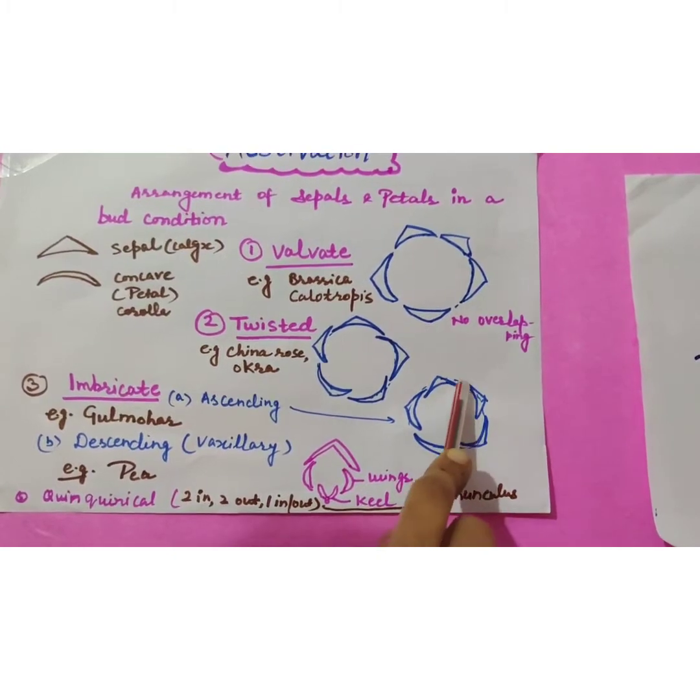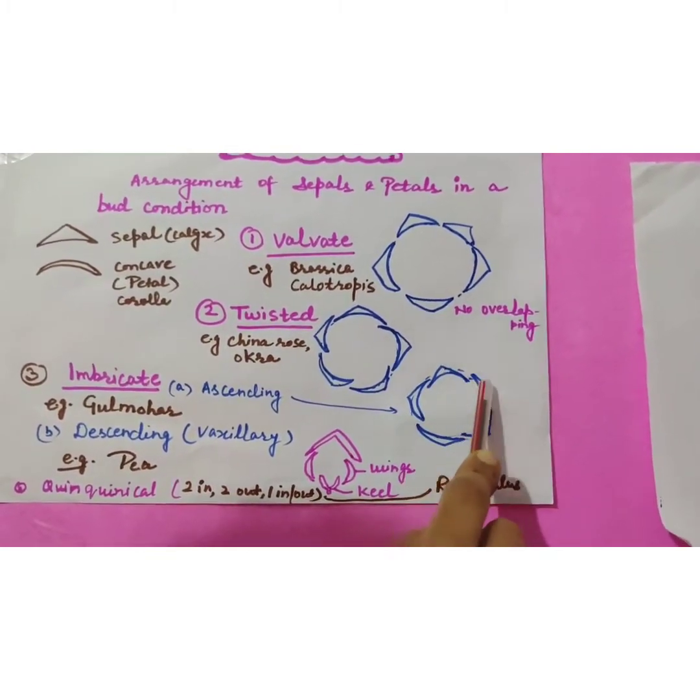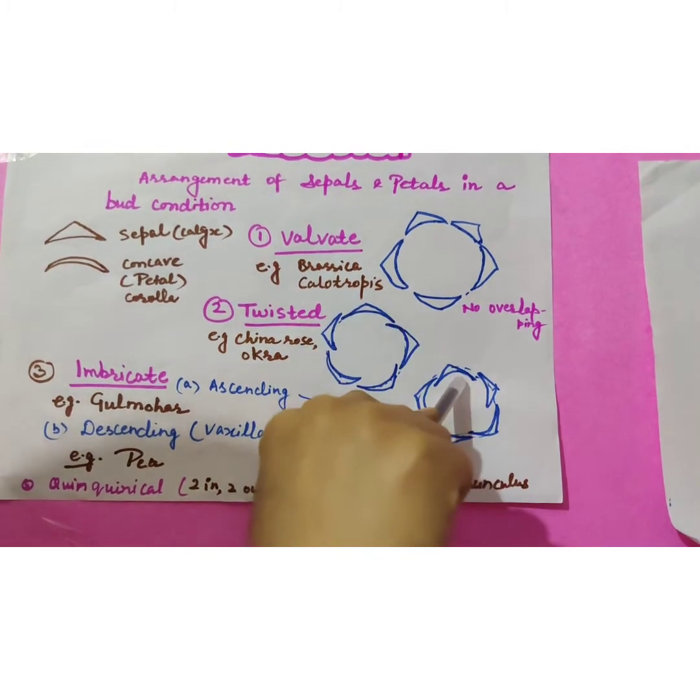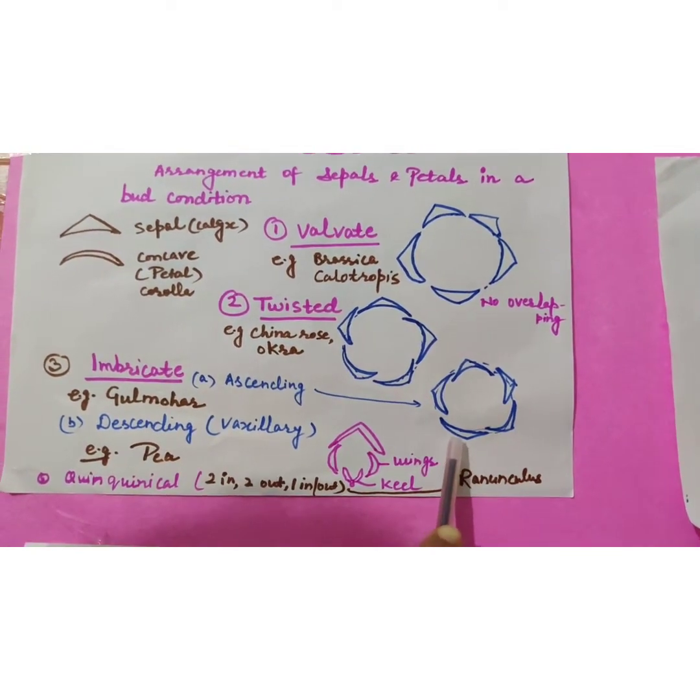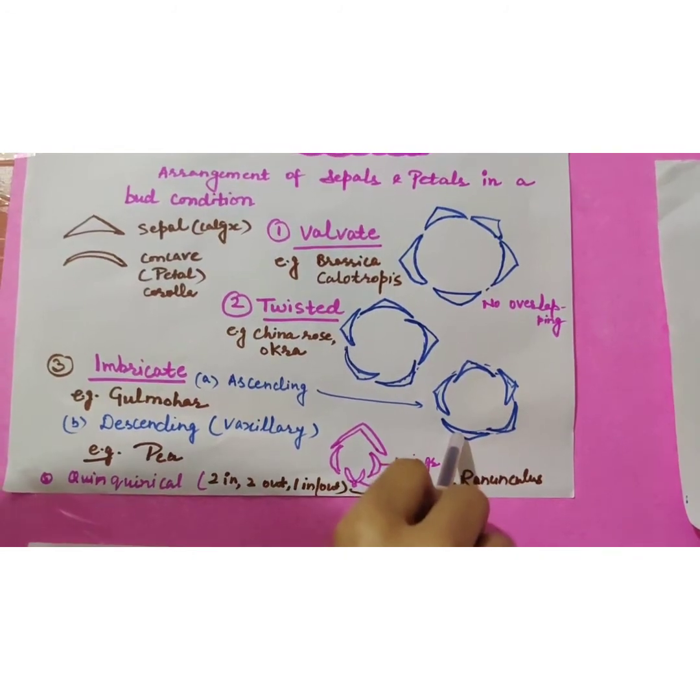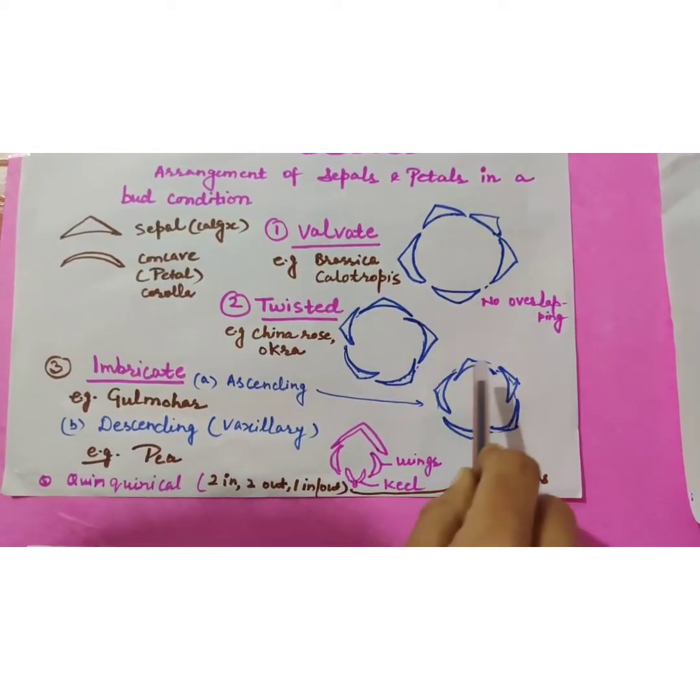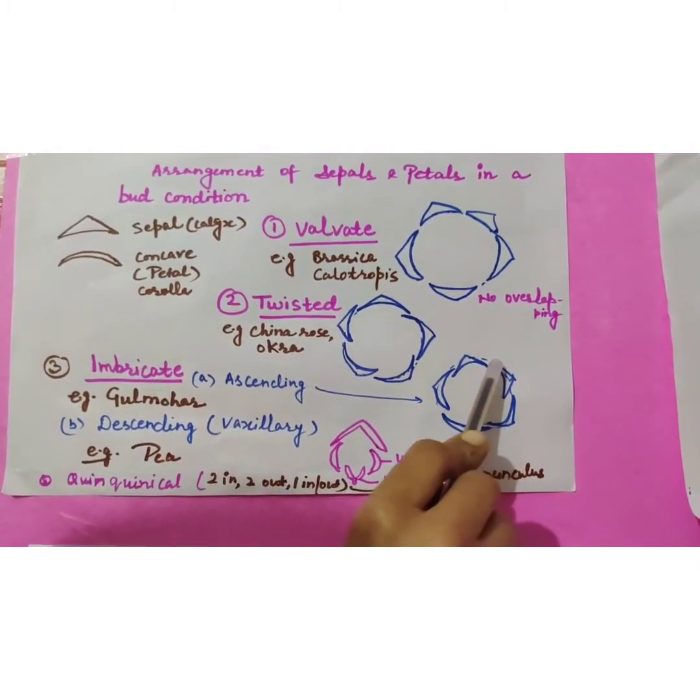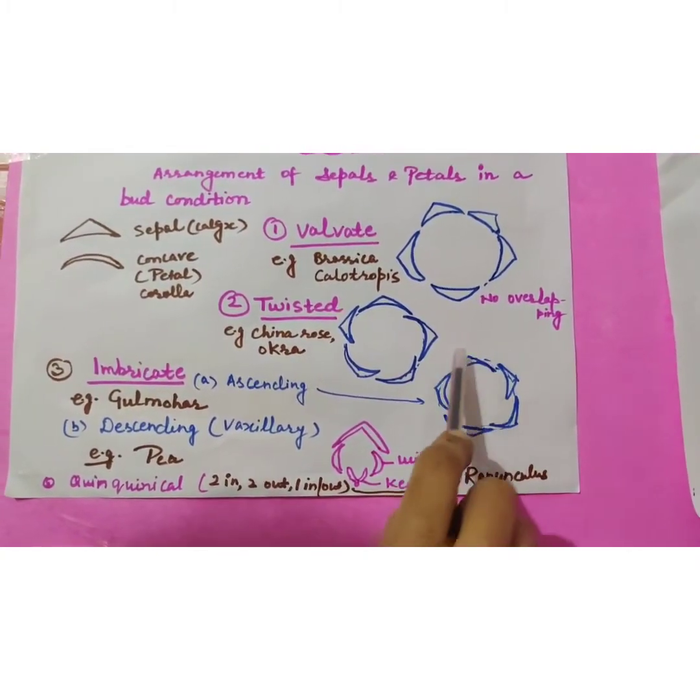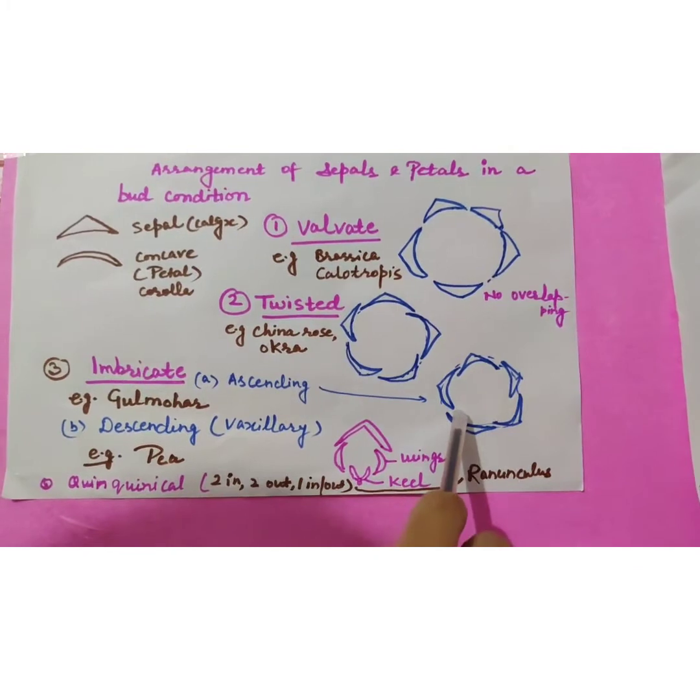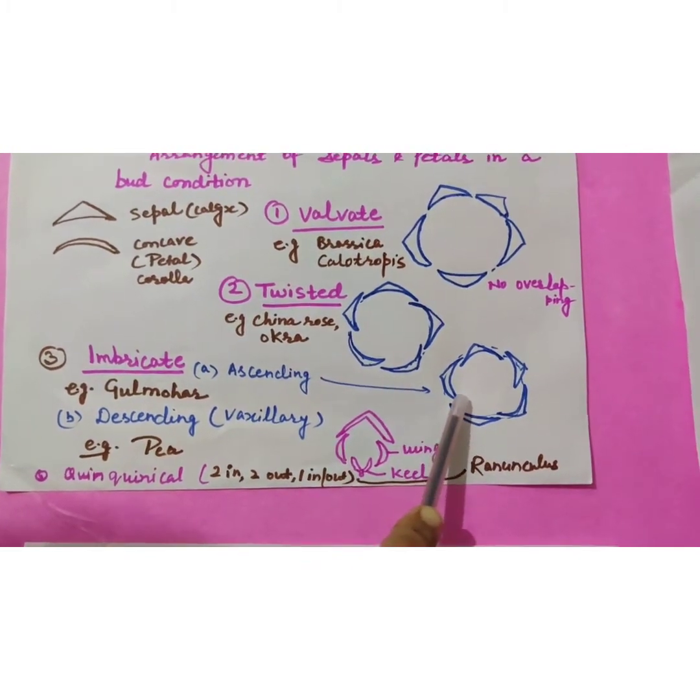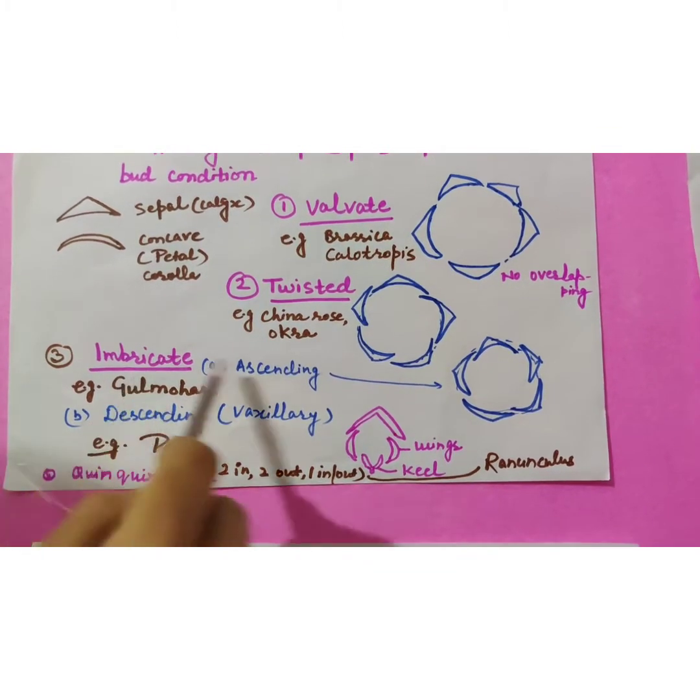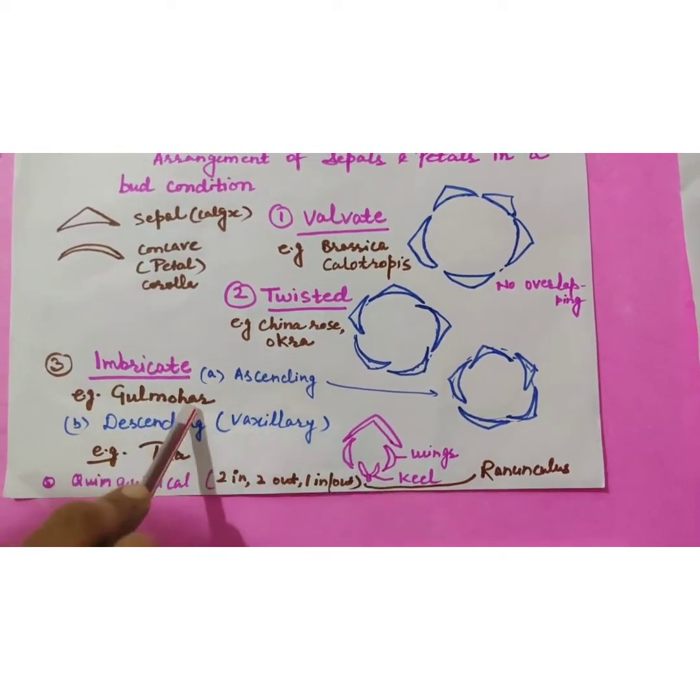One sepal is entirely overlapped by the two. Two means it is completely inner side and one is completely outside. Three are one end inside, one end outside. So if we find such type of arrangement in flower, that flower has ascending imbricate aestivation. Example is gulmohar.